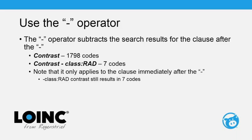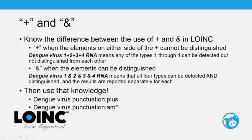The minus operator subtracts whatever comes directly after it from search results. For example, searching 'contrast' returns 1,798 codes — primarily in radiology for CT scans with and without contrast. But searching 'contrast minus class:rad' returns only seven codes. Keep in mind the minus only applies to the phrase directly after it, so 'minus class:rad contrast' still results in seven codes because the minus applies only to 'class:rad,' not to 'contrast.'